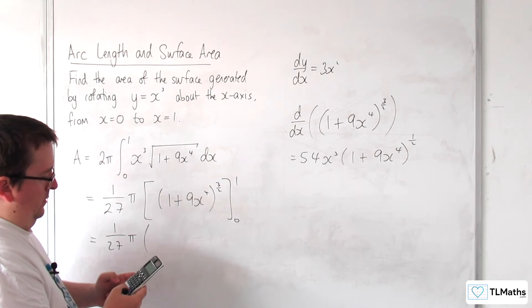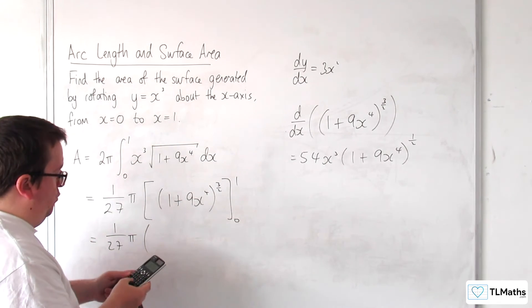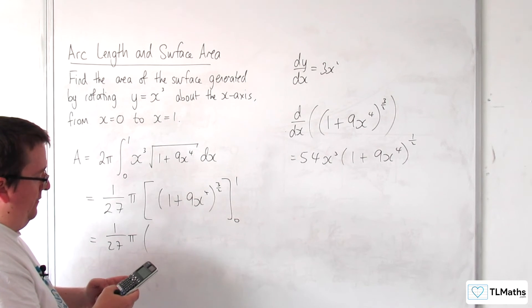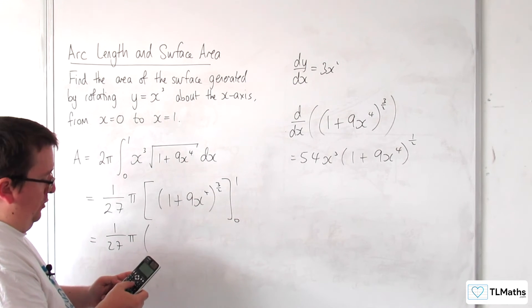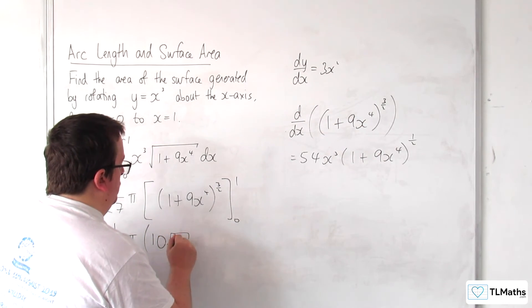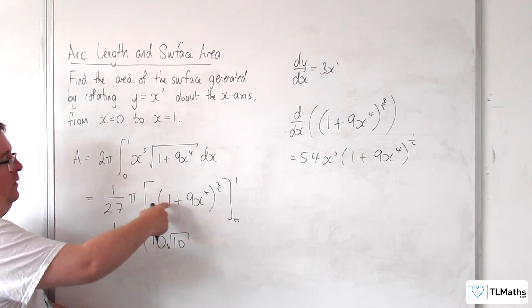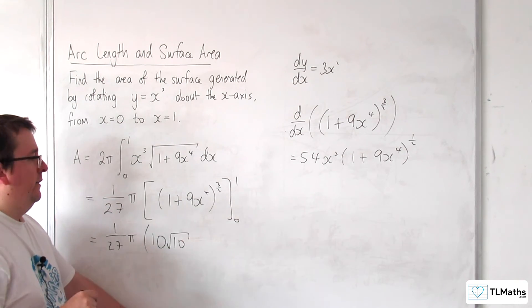My calculator doesn't like that. So the trick I showed in the previous video was, if we square root the 10 first, and then cube it, we get 10 root 10. So the calculator can write it exactly, but it has difficulty if you just put 10 to the power of 3 halves straight in your calculator.